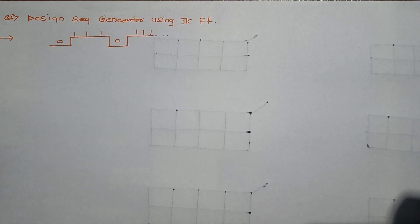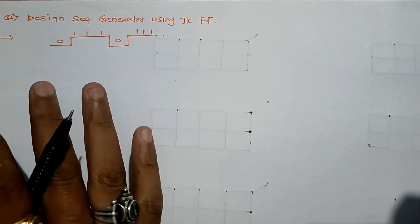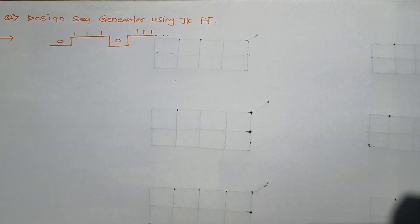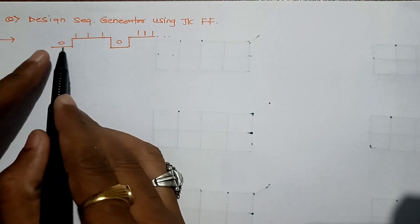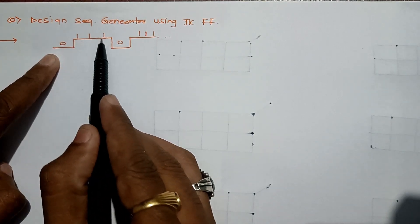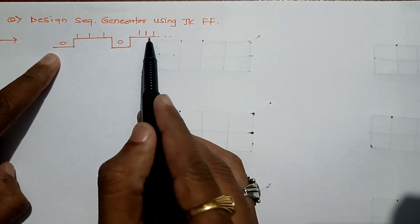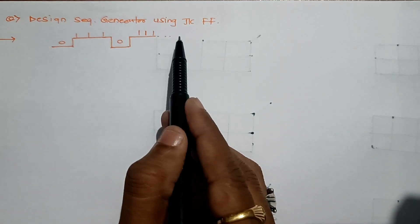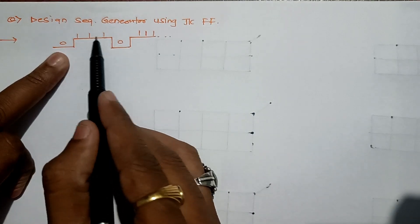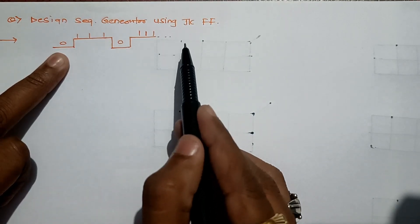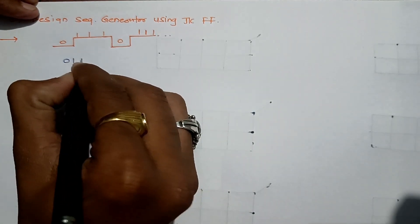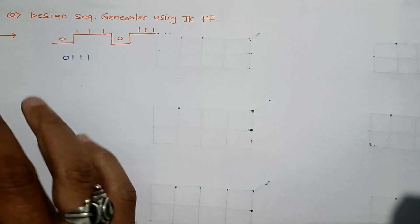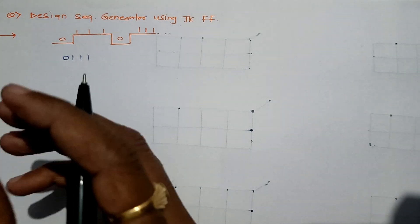Hello everyone, let's start with another question on sequence generator. The pulse sequence given has values zero, one, one, one — it starts with zero, then we have three ones, then it falls to zero again, then three ones, and so on. So basically we have to design the circuit whose output sequence will be zero, one, one, one (0-triple-1) repeating.